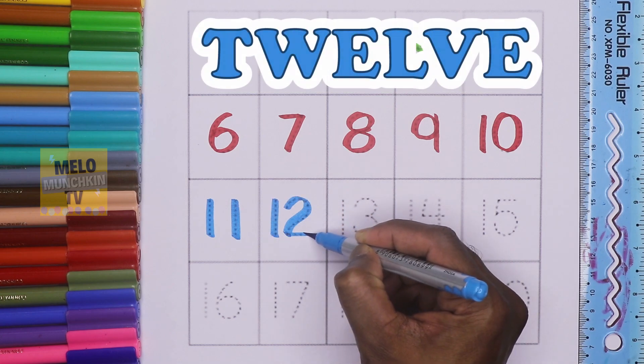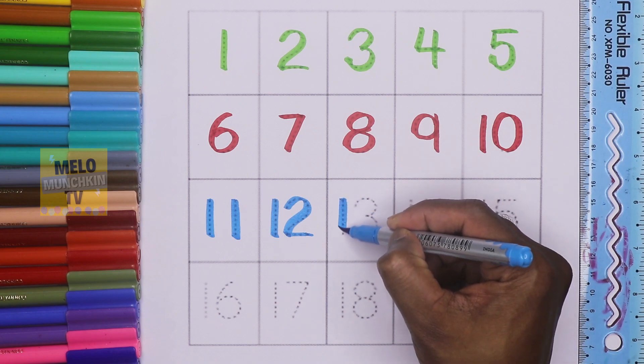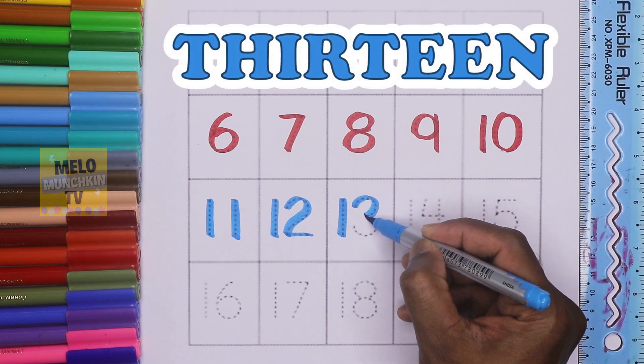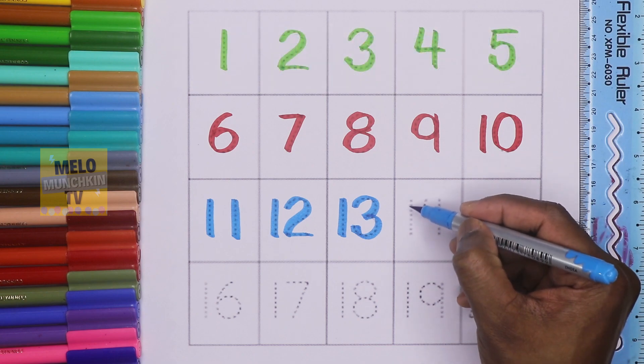This is 12, twelve. This is 13, thirteen. This is 14, fourteen.